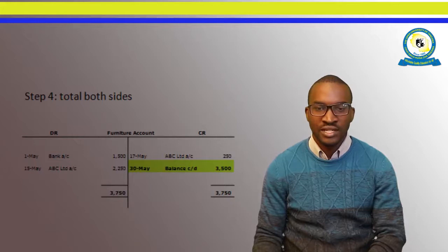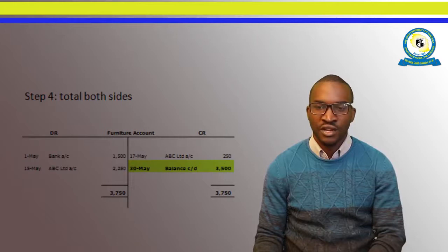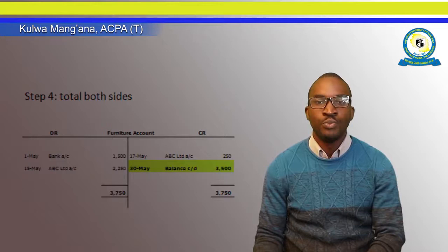Now step four: total both sides. If you total both sides, you are going to get $3,750 from the debit side and the credit side. The balancing figure of $3,500 is going to be the balance carried down.